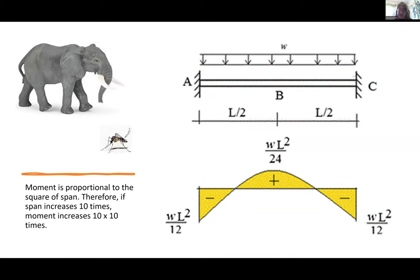The larger creatures in nature have thicker structural parts in their bodies, and the smaller creatures have thinner parts. Look at a mosquito's legs versus the legs of an elephant. The main reason: on the right side you can see a beam and its moment diagram. If you increase span 10 times, the moment increases 100 times — at least. So it is not proportional. If you take a mosquito and make it 100 times bigger, it cannot fly or walk — it will just flatten on the ground and won't work.